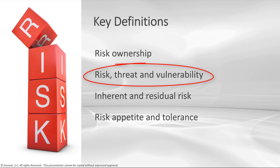A threat is anything capable of acting against one of my assets or goals that could result in harm — this could be an object or a human. A vulnerability is what the threat is trying to exploit: a weakness in my design, implementation, operations, or even my internal controls.